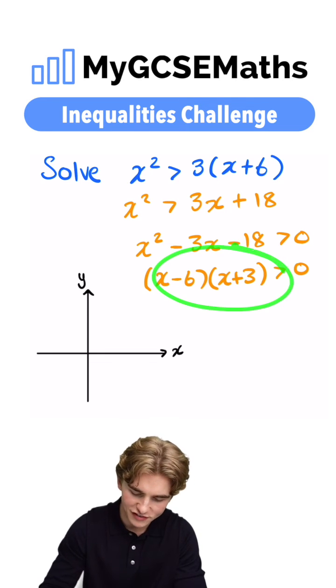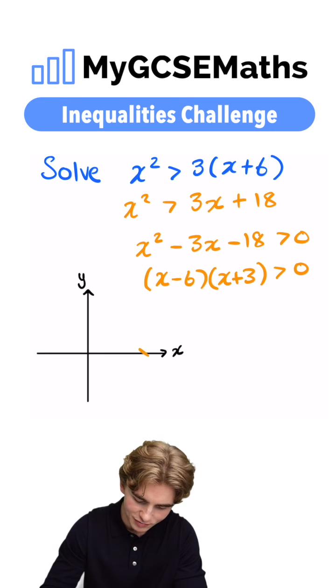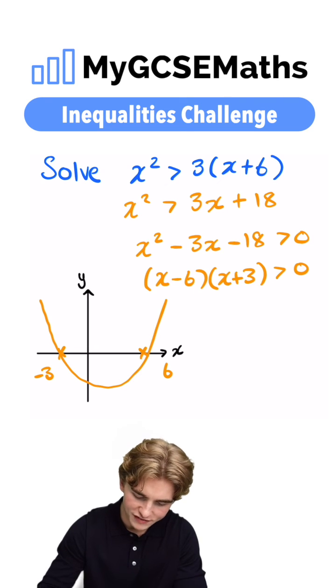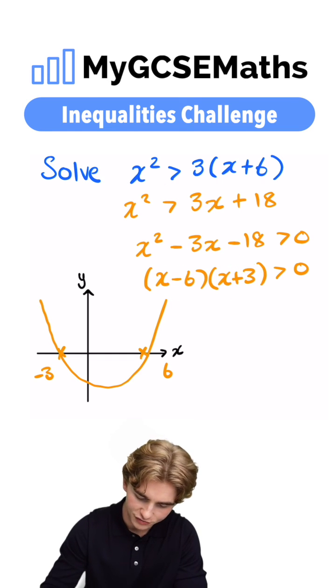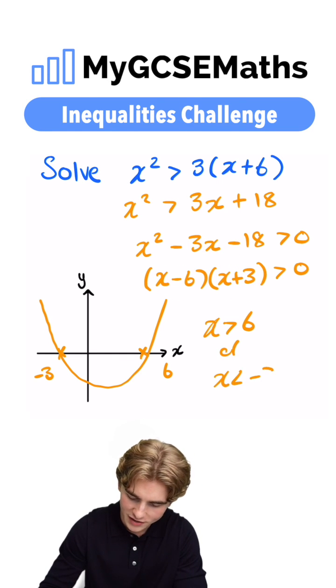We can then sketch this quadratic. We're going to have x intercepts of 6 and minus 3. So we can draw that on like so. And we want where this is greater than 0. It's greater than 0 when x is greater than 6 or x is less than minus 3. So we have x is greater than 6 or x is less than minus 3.